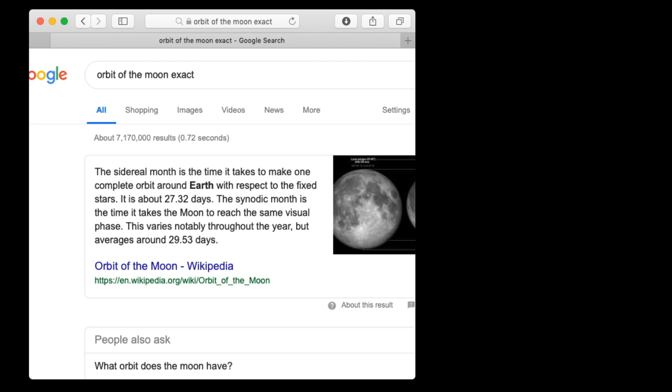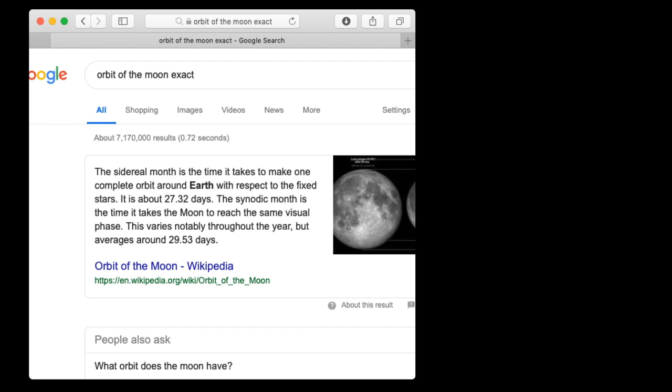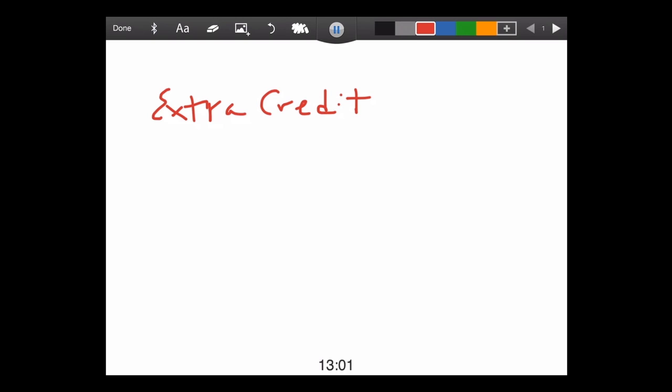Now, another source of error is the 84 minutes that I used for the Earth's rotation to make an object weightless on the equator was also a slightly rounded number, and it may be a few seconds off, and on a small number like that, a few seconds may make a difference. Now, let's go ahead and do some extra credit. All right? Let's do a couple of things.